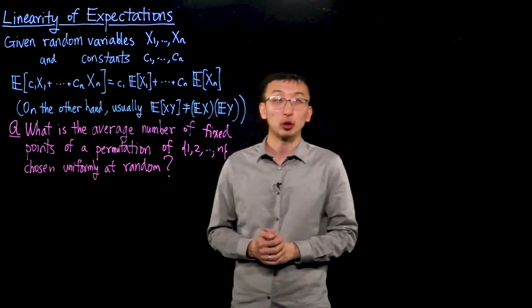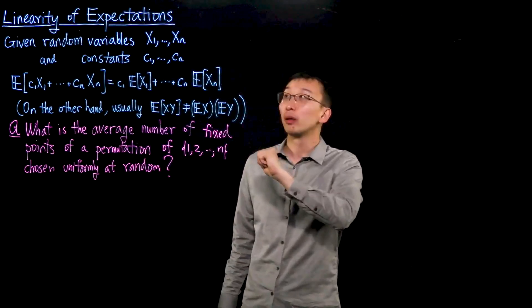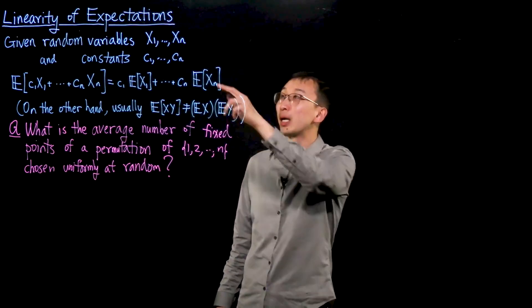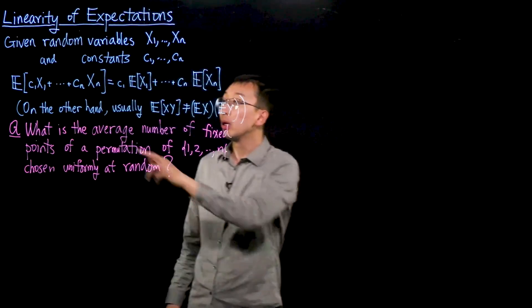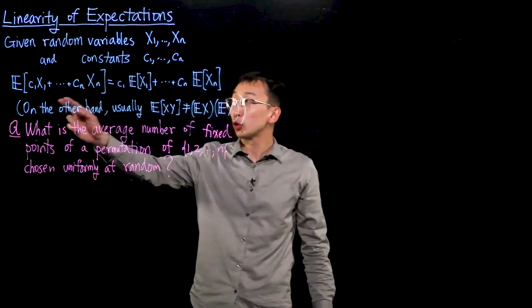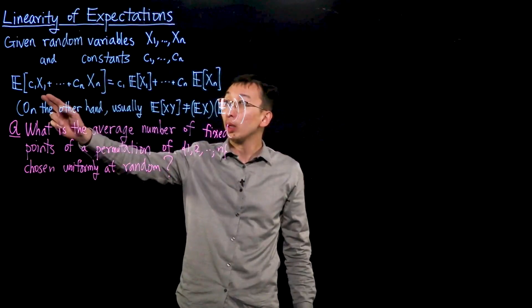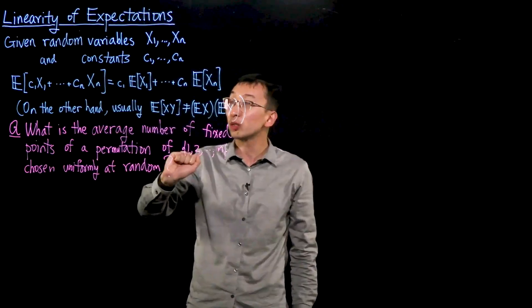Linearity of expectations says that if you are given random variables x1 through xm and constants c1 through cm, then when we take a linear combination of these random variables, so c1 times x1 (imagine these are real valued random variables and these are real constants for instance).